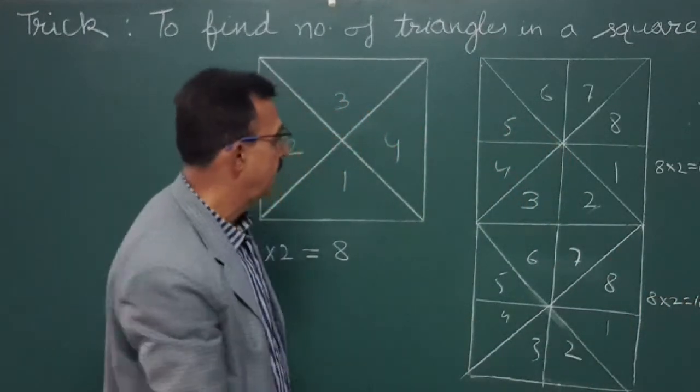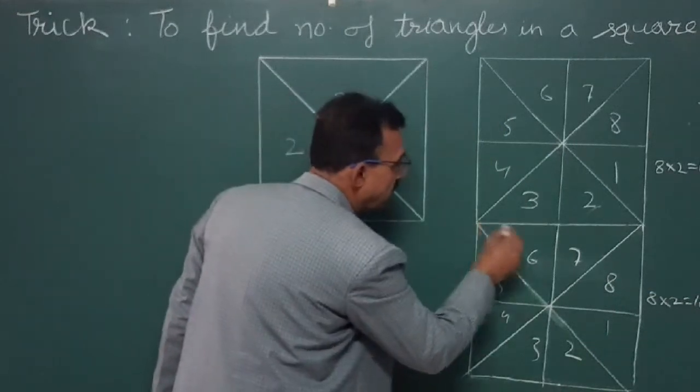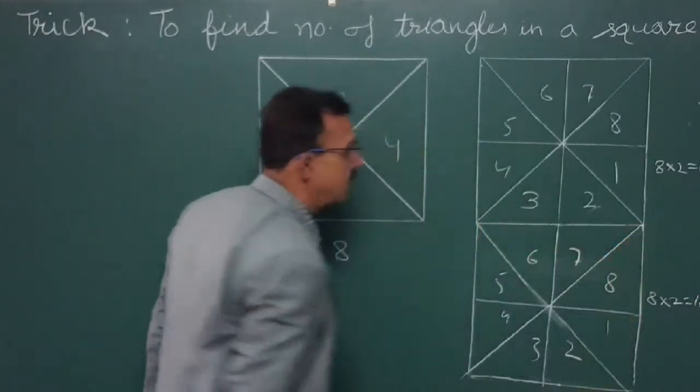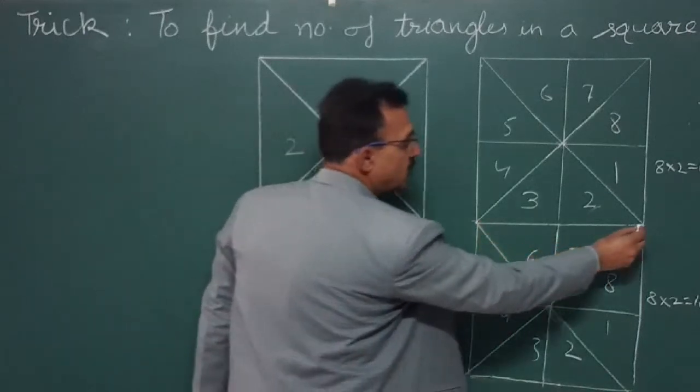When we have 16, we have a joint. There are two joints in it, right? So there are two joints. If we have a joint, then we have a joint.